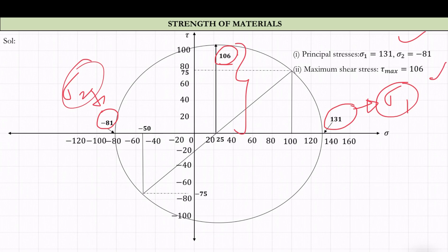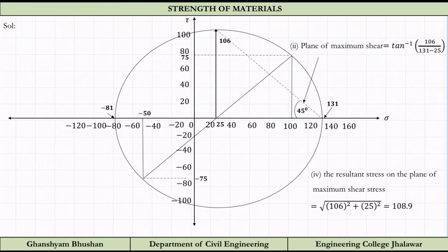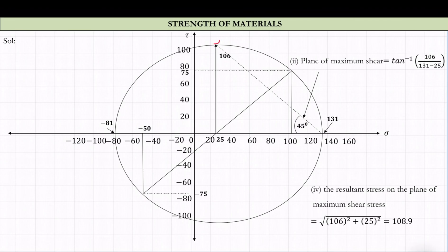Whatever unit sigma_x and sigma_y are in, everything will be in the same unit. Tau_max is 106, and you have to measure it by scale. First define the scale — for example, one centimeter equals 20 MPa. Measure the line length and multiply by 20. For the plane of maximum shear, the line joining these two points gives the plane of maximum shear, and we use tan inverse to find the angle.